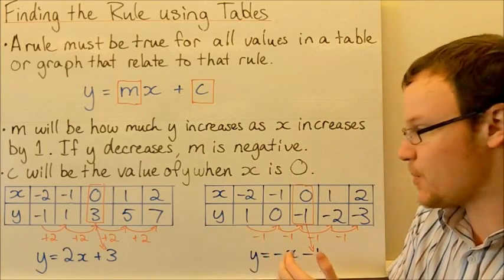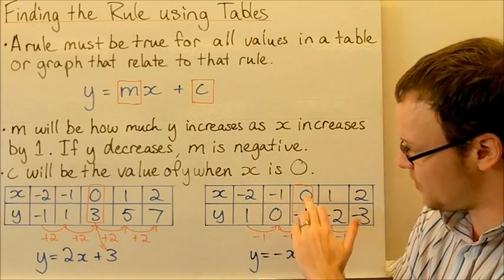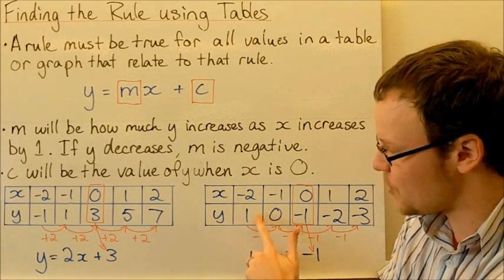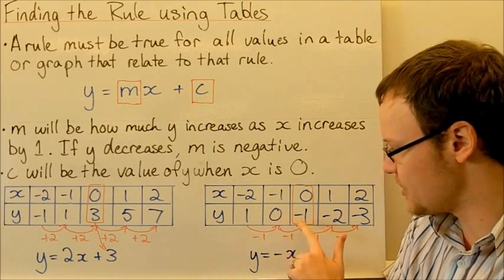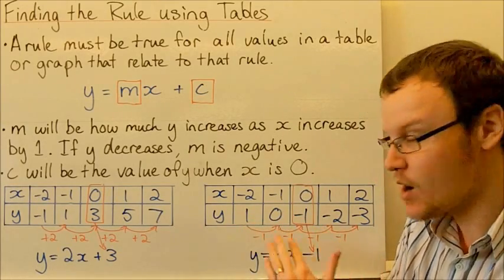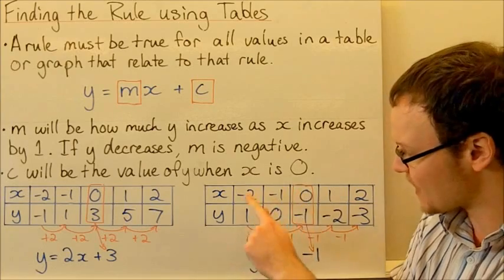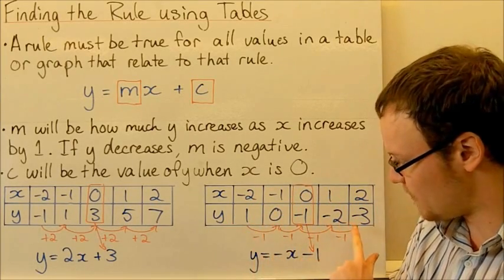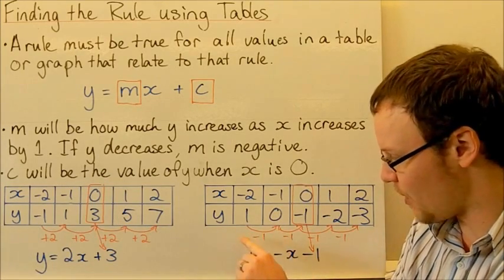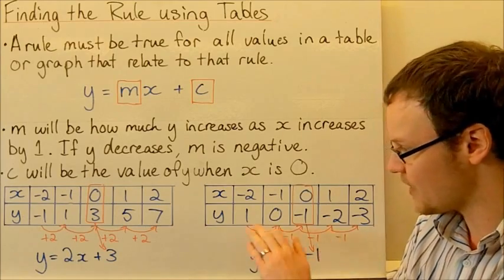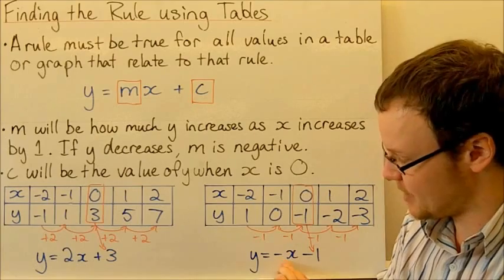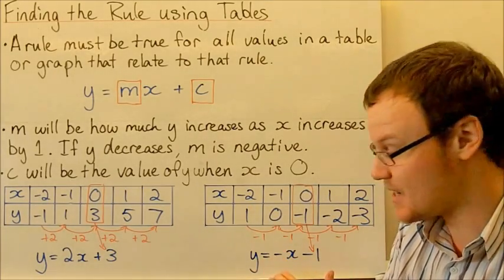Looking at another example, x is increasing by 1 each time again. Let's look at how much y changes: y goes from 1 to 0 to negative 1 to negative 2 to negative 3 — so we're subtracting 1 each time. y is decreasing as x gets bigger, which means m is going to be negative 1, the same as negative 1x.